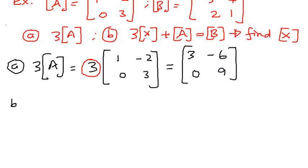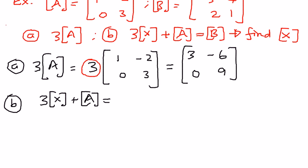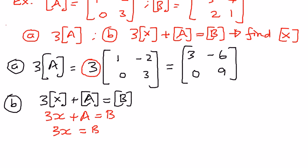Let's look at the second part of this example. We want to solve for X. The equation is 3 times matrix X plus matrix A equals matrix B — very similar to an algebraic equation: 3X plus A equals B. We subtract A on both sides, so 3X equals B minus A. Then we divide by 3 on both sides, giving X equals 1 over 3 times (B minus A).